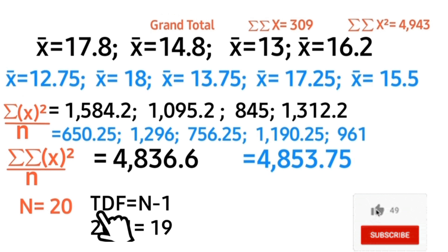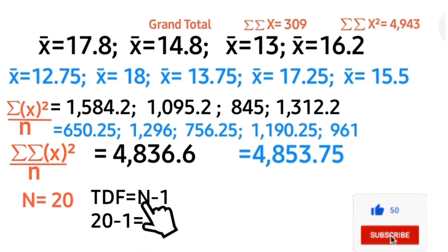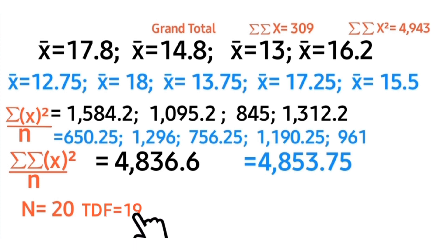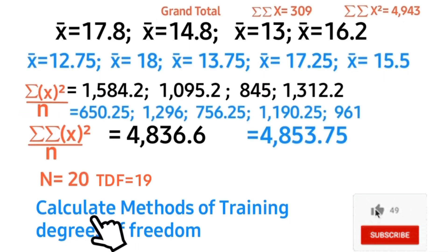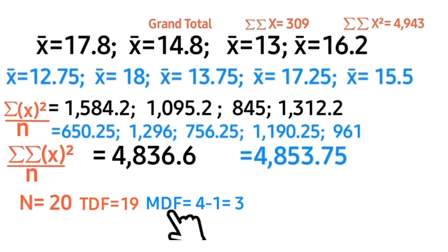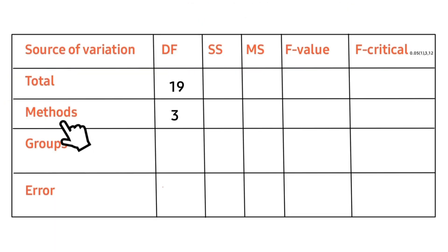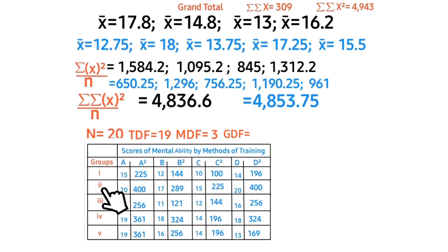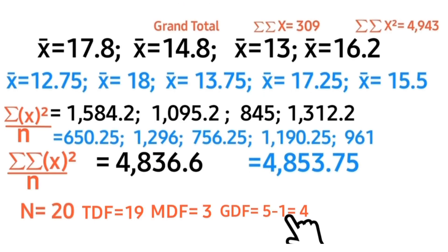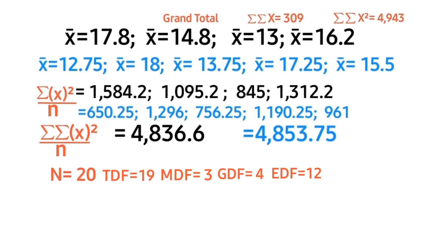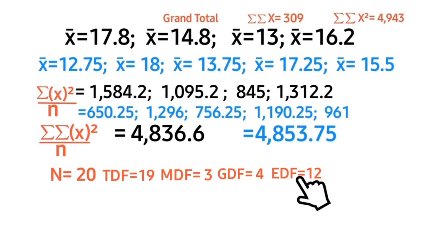Calculate total degrees of freedom. Total degrees of freedom (TDF) equals N minus 1. With N equals 20, TDF equals 19. Record this in the ANOVA summary table. Methods of training degrees of freedom: we have four methods (A, B, C, D), so methods df equals 4 minus 1 equals 3. Group degrees of freedom: we have five groups, so groups df equals 5 minus 1 equals 4. Error degrees of freedom equals methods df times groups df, which is 3 times 4 equals 12.